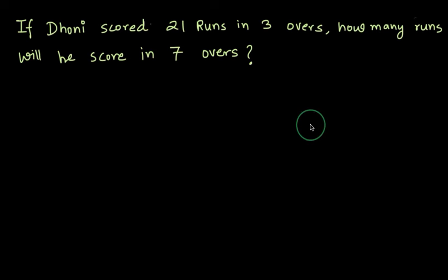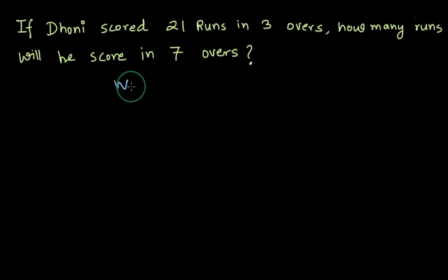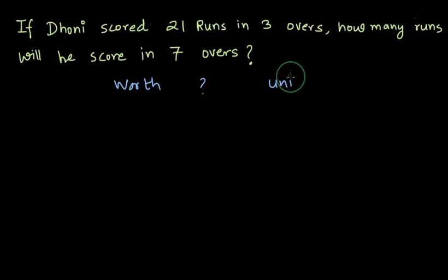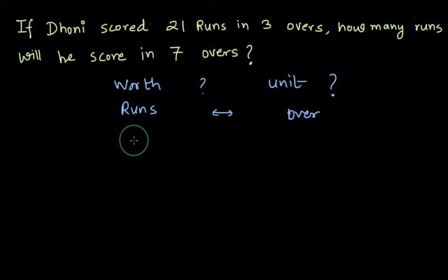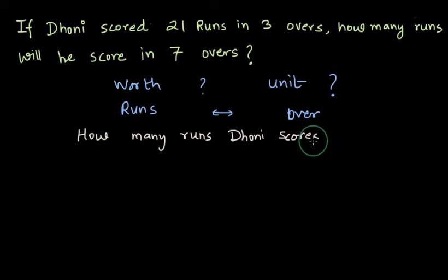In this problem, Dhoni scored 21 runs in 3 overs. How many runs will he score in 7 overs? Again, we need to find out what is the worth and what is the unit. Worth is runs and the unit is an over. We need to find the worth of a single unit — that is, how many runs Dhoni scores in a single over.